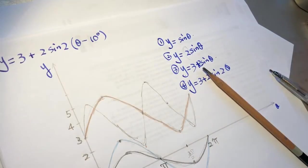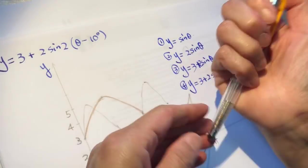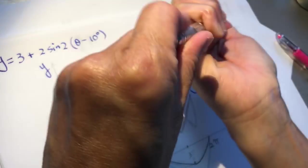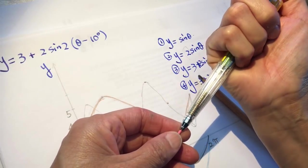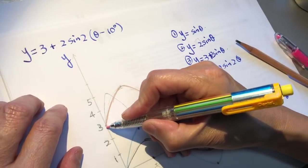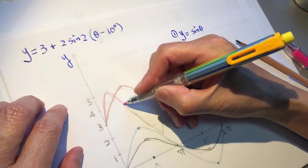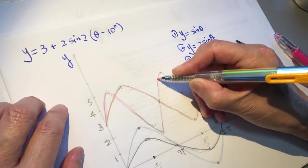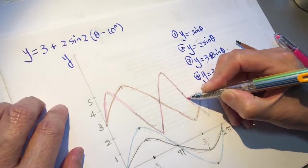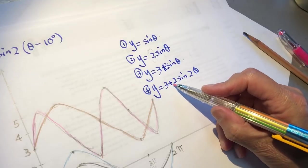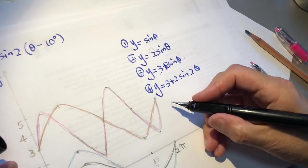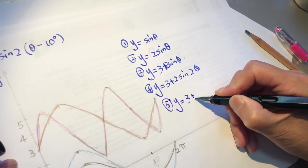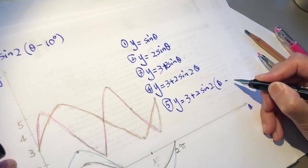Choosing a color — let's use pink. This is our fourth graph: y equals 3 plus 2 sine 2 theta. Now we come to the last step, number five: y equals 3 plus 2 sine 2 theta minus 10 degrees.